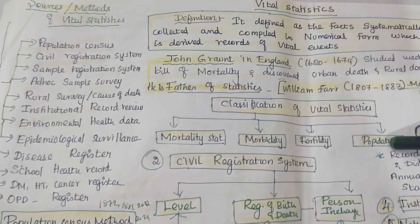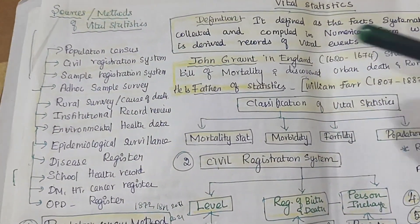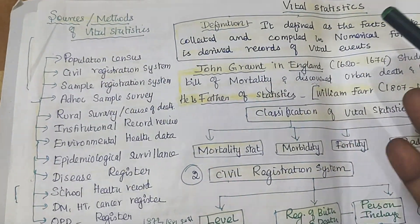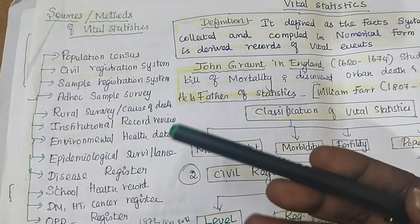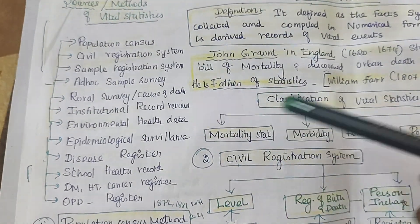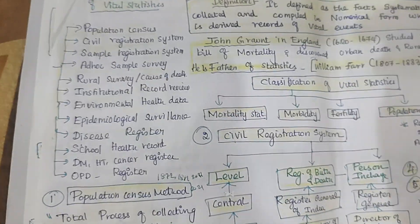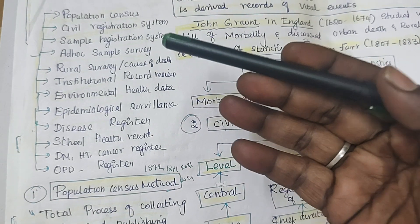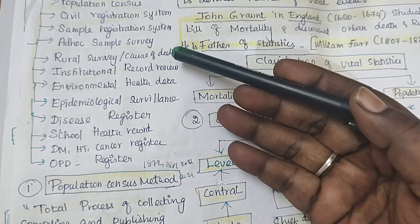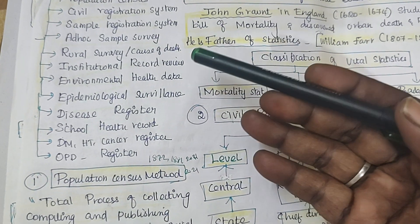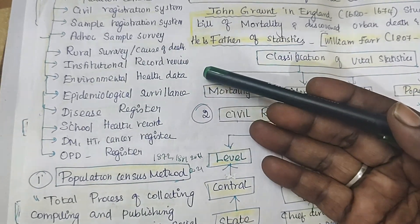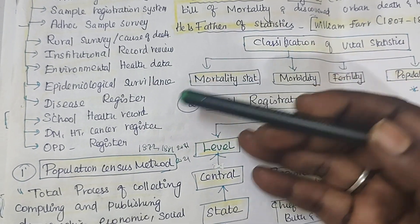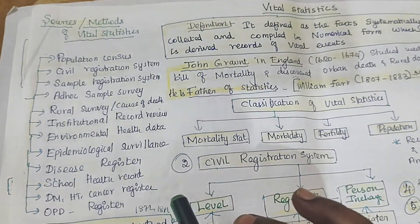What is the classification of vital statistics? Where do you get this vital information? Because it is about the health of the total country. The sources are: first, population census; civil registration system; sample registration system; rural survey and ad hoc sample survey; institutional records; epidemiological records; disease records; school health records; diabetes records; and epidemiological surveillance reports. Everything is a source of vital statistics.